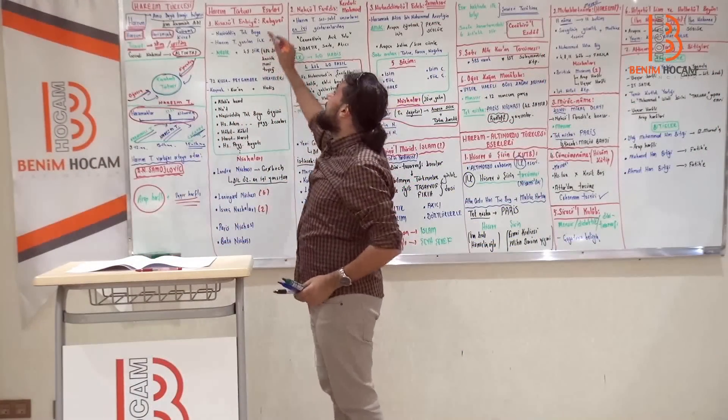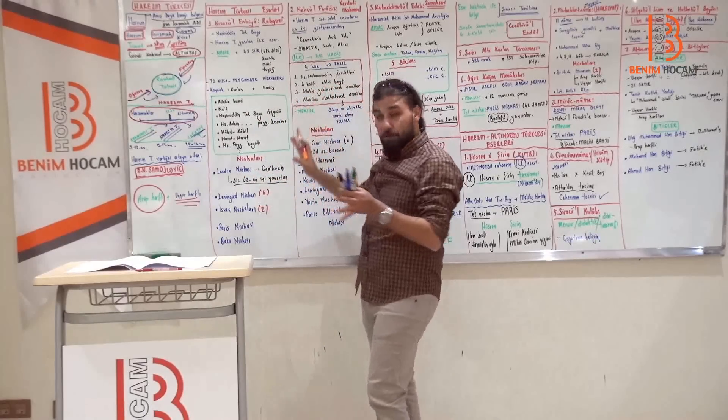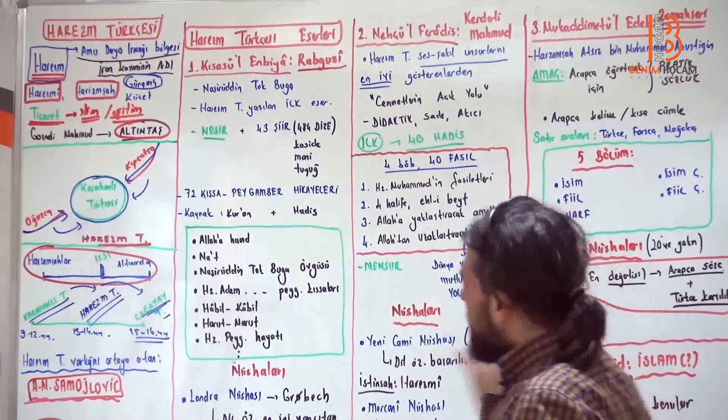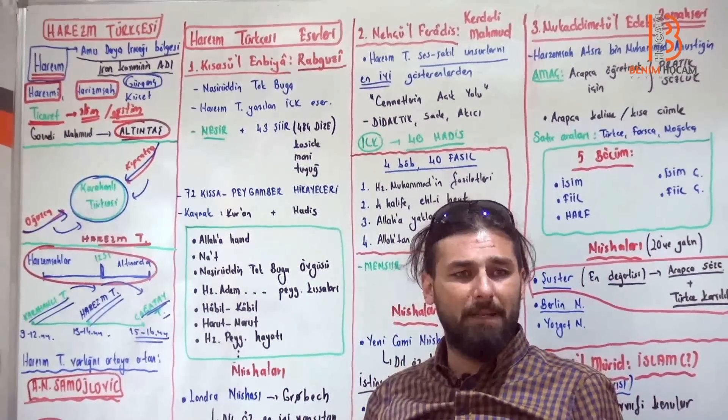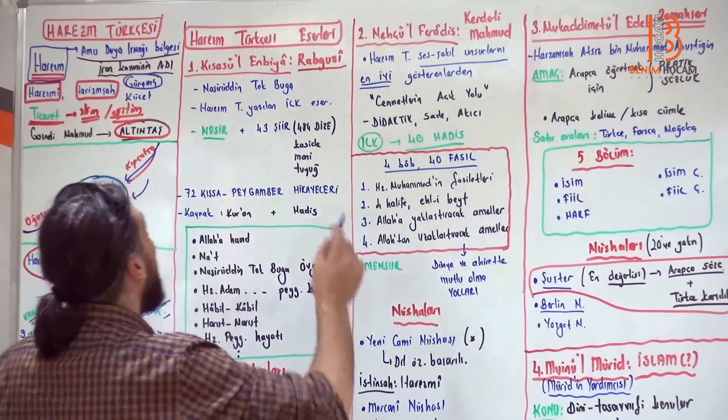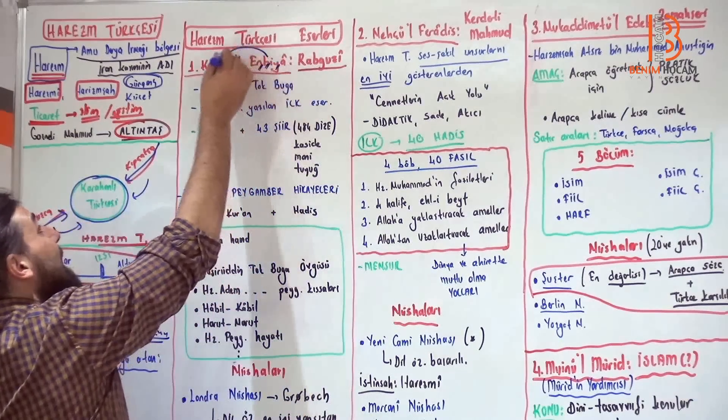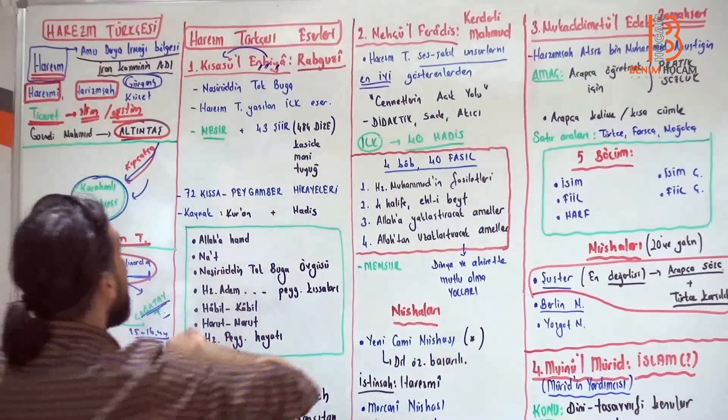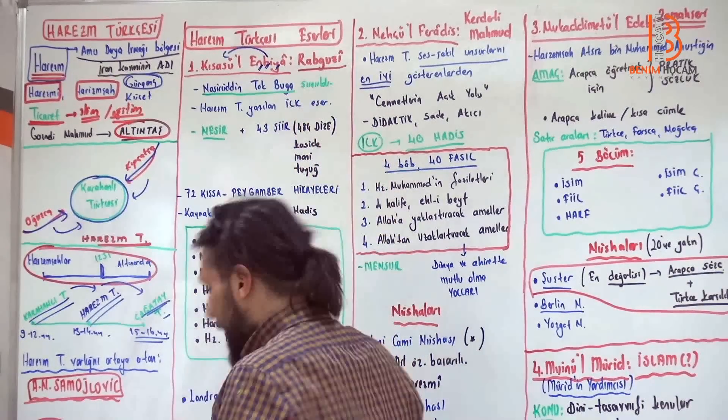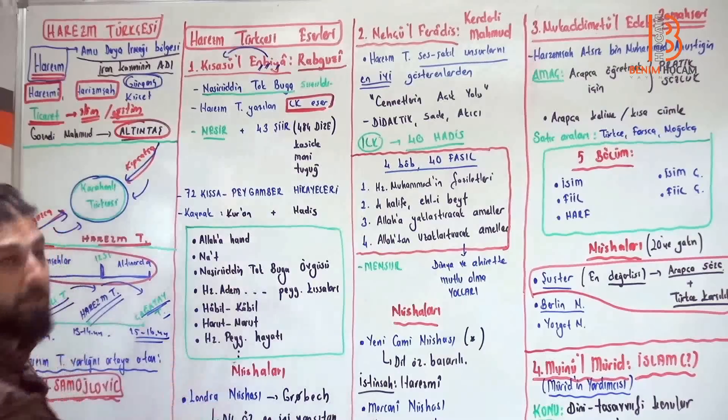1- Kısa Sül Enbiya, Rabguzi. Harezm Türkçesi eserlerini tanıyacağız. Kısa Sül Enbiya. Kim yazmıştır? Rabguzi. Adı üstünde. Enbiya, Nebi, Peygamberlerin kıssaları. Gençler, Nasirüttün Tokbuga'ya sunuldu bu eser. Ve önemi nedir? Harezm Türkçesi ile yazılan ilk eser olarak karşımıza çıktı.